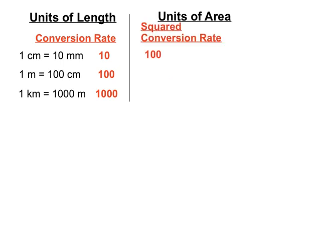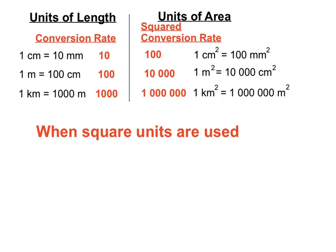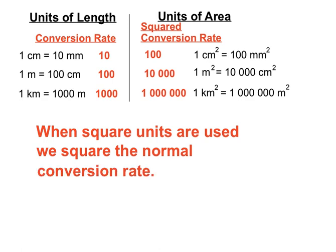The squared conversion rates: 10 squared is 100, 100 squared is 10,000, and 1000 squared is actually a million — a pretty big conversion rate. So whereas we use 10 as the conversion rate between centimetres and millimetres, we use 10 squared, or 100, as the conversion rate between square centimetres and square millimetres. We use a squared conversion rate of 10,000 between square metres and square centimetres, and a massive conversion rate of a million — there are a million square metres in every square kilometre. When square units are used, we square the normal conversion rate between those units.